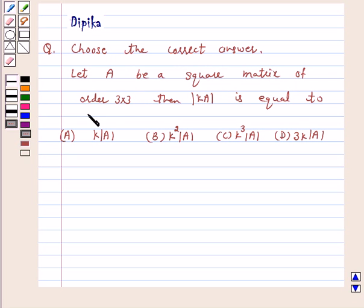Choose the correct answer. Let A be a square matrix of order 3 by 3. Then determinant of KA is equal to: A, K into determinant of A; B, K square into determinant of A; C, K cube into determinant of A; D, 3K into determinant of A.